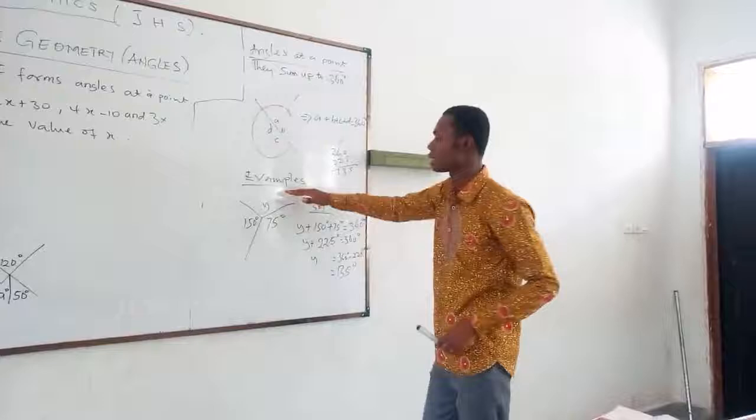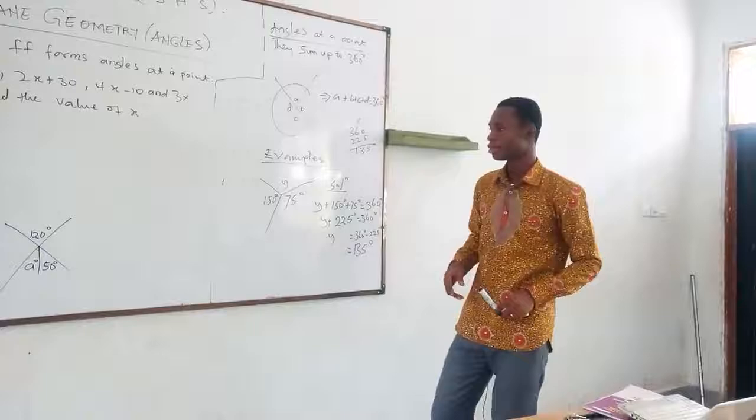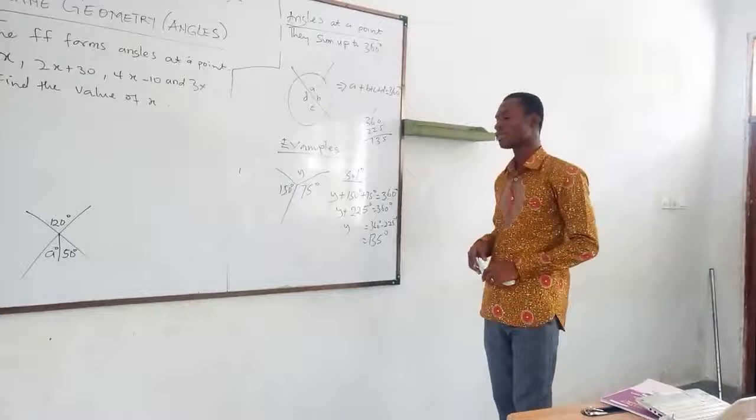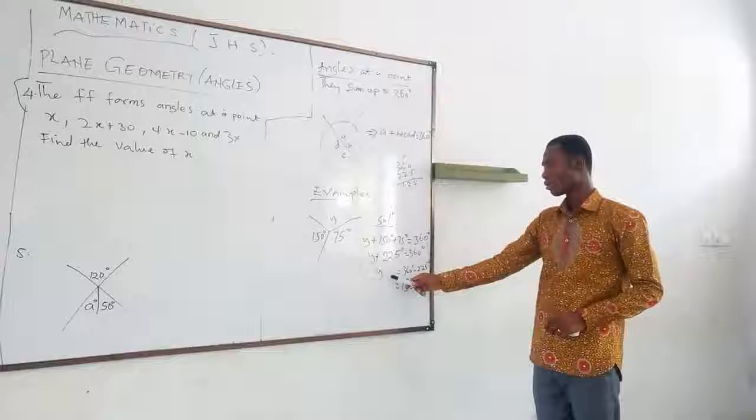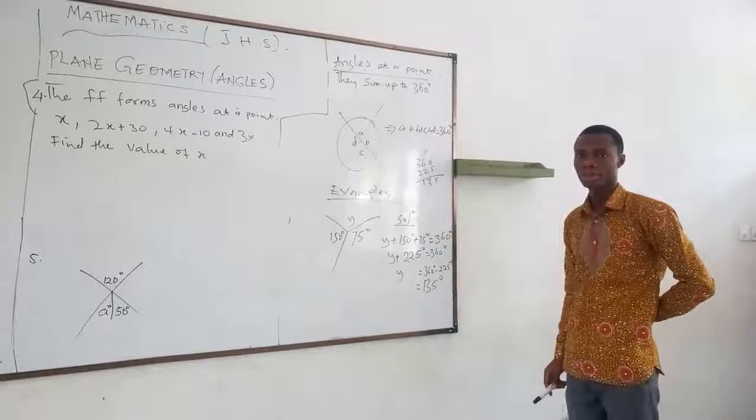We have Y, 150 degrees, and 75 degrees. We write Y plus 150 degrees plus 75 degrees equals 360 degrees. Y plus 225 equals 360 degrees. So Y equals 360 degrees minus 225, which gives 135 degrees.